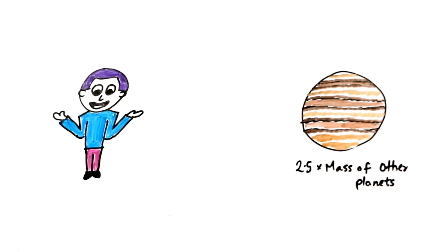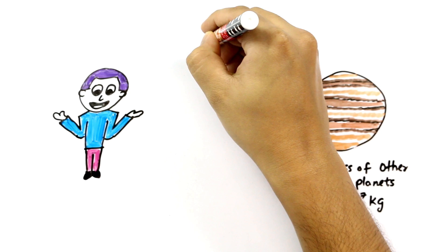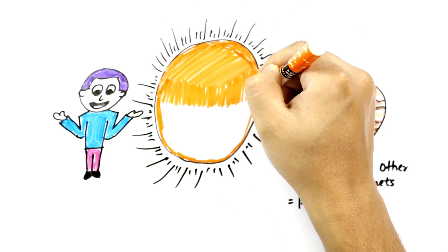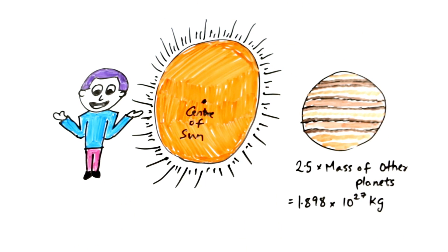With 2.5 times the mass of all the other planets in the solar system combined, it's big enough that the center of gravity between Jupiter and the Sun doesn't actually reside inside the Sun,